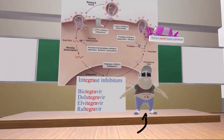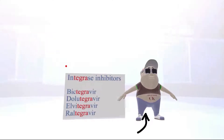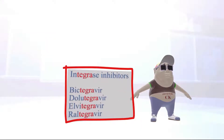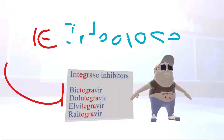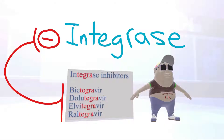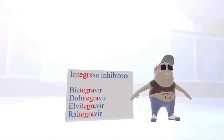Let's begin with this guy over here, who is going to teach us about the integrase inhibitors. The integrase inhibitors don't really need a mnemonic, because they all have 'tegra' in it — integrase, tegra: bictegravir, dolutegravir, elvitegravir, raltegravir — which reminds us of integrase inhibitors. They're called integrase inhibitors because they inhibit HIV genome integration into the host cell chromosome.